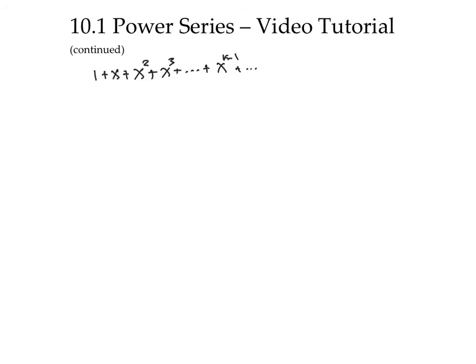Sometimes geometric series can have variables in them. Consider this series, which has the form of a geometric series with first term 1 and ratio x. It only converges when the absolute value of x is less than 1. What does it converge to? Interestingly, it converges to a over 1 minus r, or in this case 1 over 1 minus x. There's a Desmos share posted on Moodle called BC 10.1 where you can see that the left and right expressions are very close when x is between negative 1 and 1.